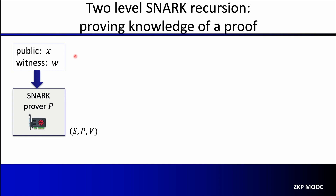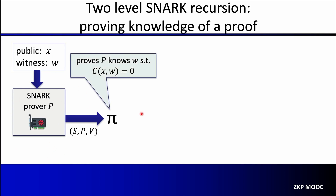This idea can blow your mind — we're not proving that we know a witness for the statement X, but rather we prove that we know a proof of a witness for the statement X. So let's see how that works. We start with a statement X and a witness W, and we use our SNARK to produce a proof that W is a valid witness for X. This proof pi proves knowledge of W such that C(X, W) = 0.